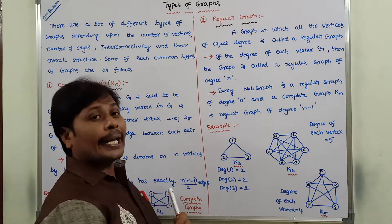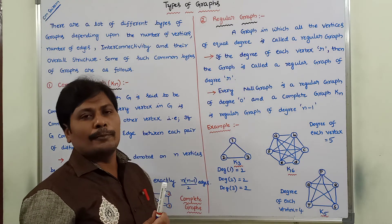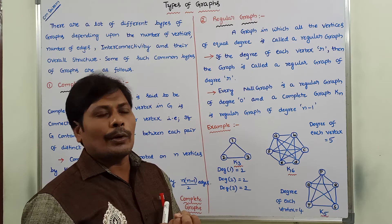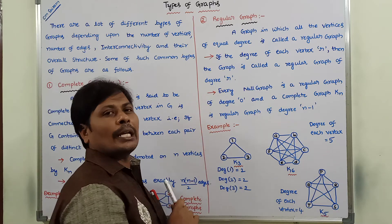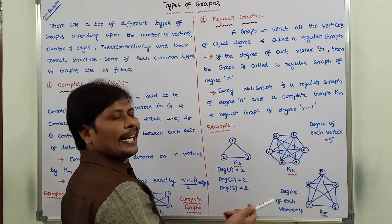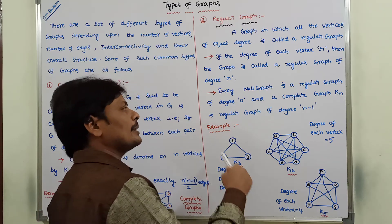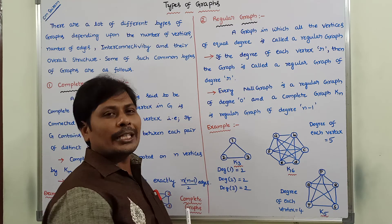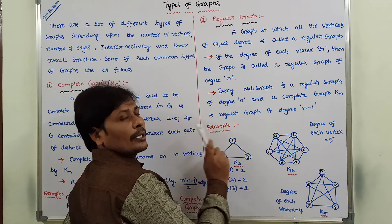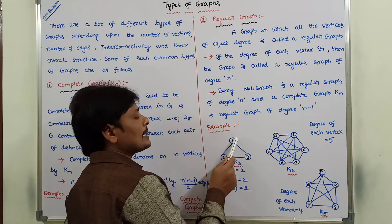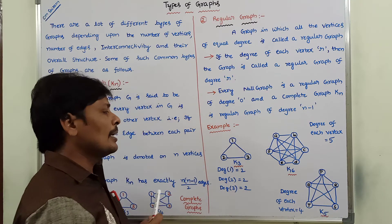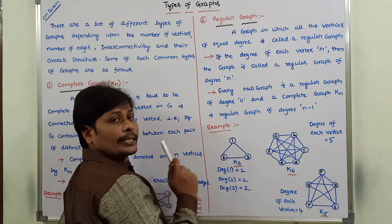Now we go to the regular graph. Before going to the definition, I will first explain an example and then go to the definition. Observe this graph — this graph is K3 because it contains three vertices, and every vertex is connected with the remaining vertices.